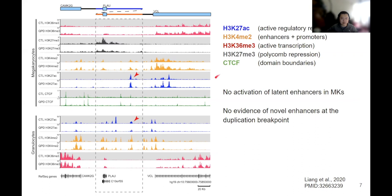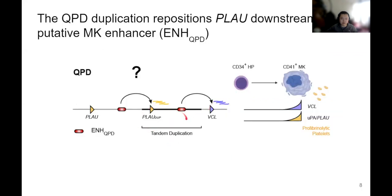What really caught our attention was one peak highly enriched for H3K27 acetyl in megakaryocytes compared to granulocytes, indicating a putative megakaryocyte-specific enhancer. The positioning of this peak is unique: considering the tandem duplication, you actually end up repositioning a copy of PLAU downstream of this enhancer. This gives us a scenario where this putative tissue-specific enhancer may be driving a copy of PLAU, explaining the tissue- and allele-specific expression phenotype seen in disease.